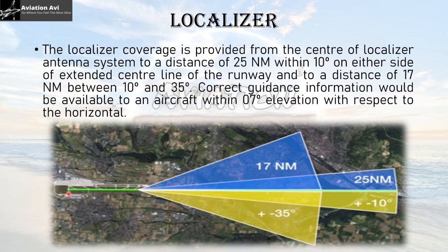The localizer coverage is provided from the center of the localizer antenna system to a distance of 25 nautical miles within 10 degrees on either side of the extended center line of the runway, and to a distance of 70 nautical miles between 10 degrees and 35 degrees. Correct guidance information is available if the aircraft is within seven degrees elevation with respect to the horizontal.